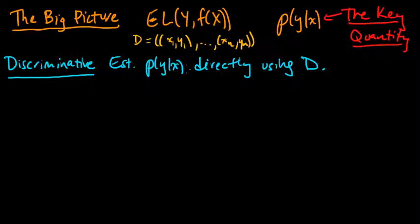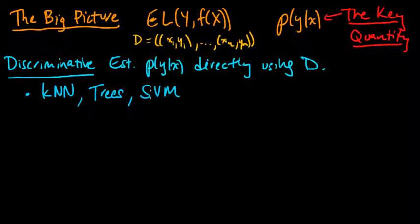And the discriminative approach says, model these conditional distributions directly. Maybe you'll have some family of conditional distributions, but you're going to try to estimate these directly, taking advantage of the fact that this was all we really needed to know. So some examples: K nearest neighbor was doing this, and trees can be viewed as modeling these conditional distributions. And another type of discriminative method, very commonly used, support vector machines, are discriminative.